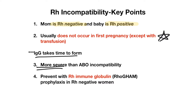RH incompatibility is usually more severe than ABO incompatibility, which we will be talking about next. We prevent this by giving mom RhoGAM, or RH immune globulin, around 28 weeks of pregnancy, because this can help prevent hemolytic anemia from happening should mom be RH negative and pregnant with an RH positive baby.